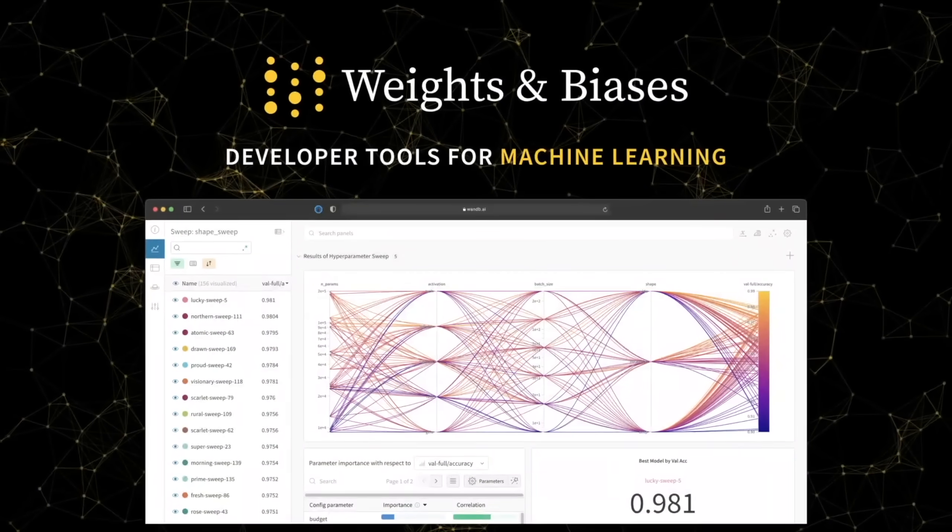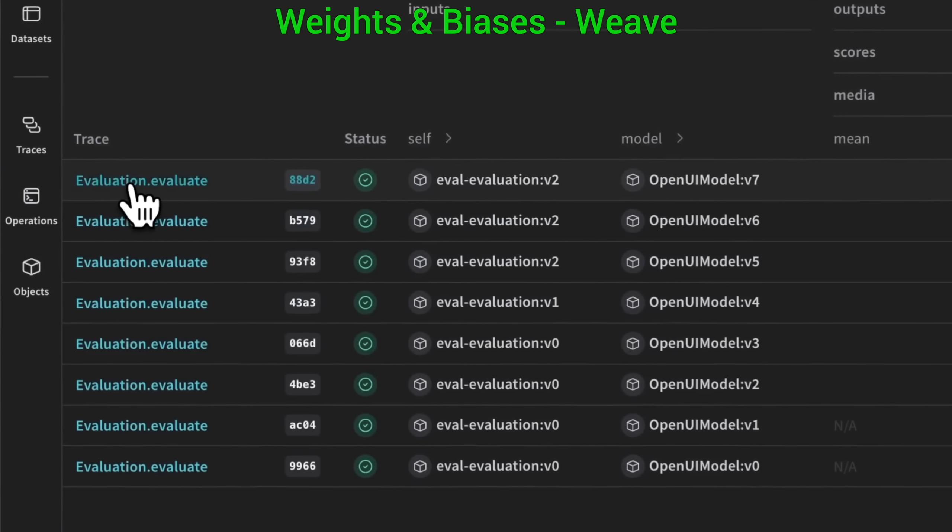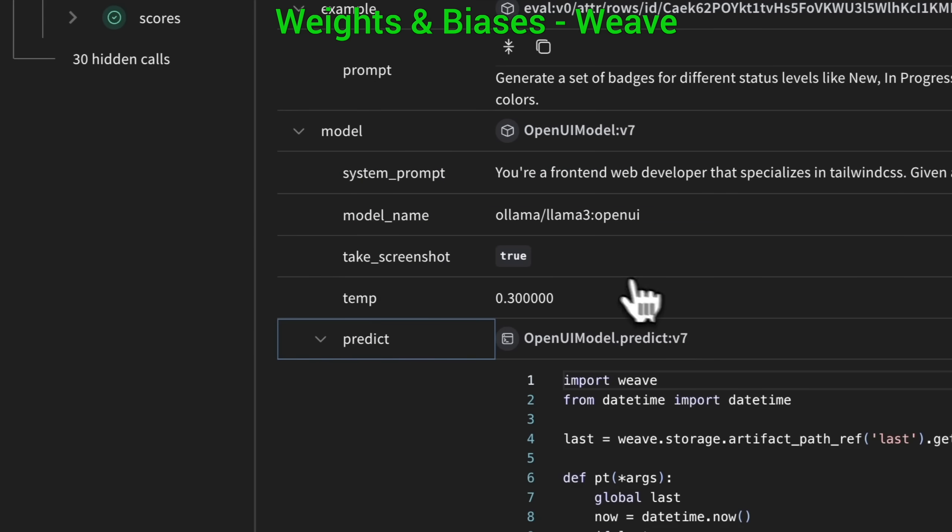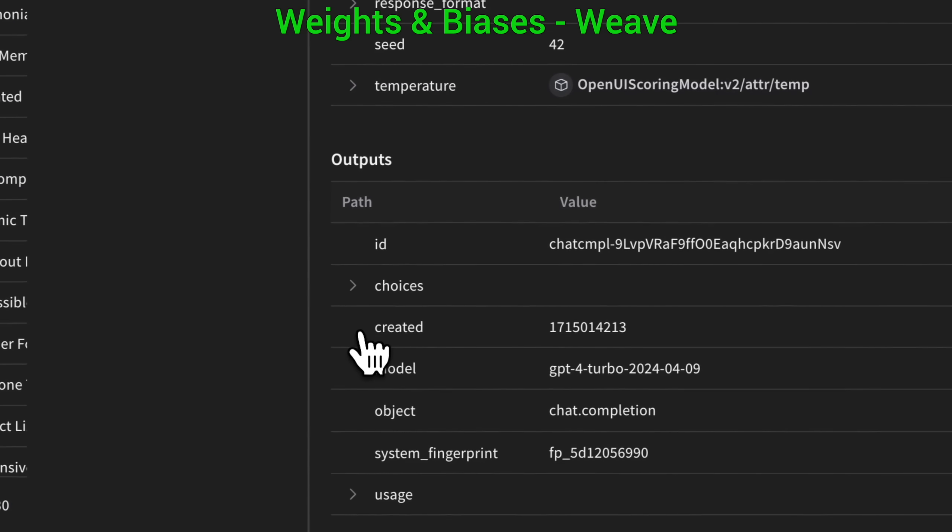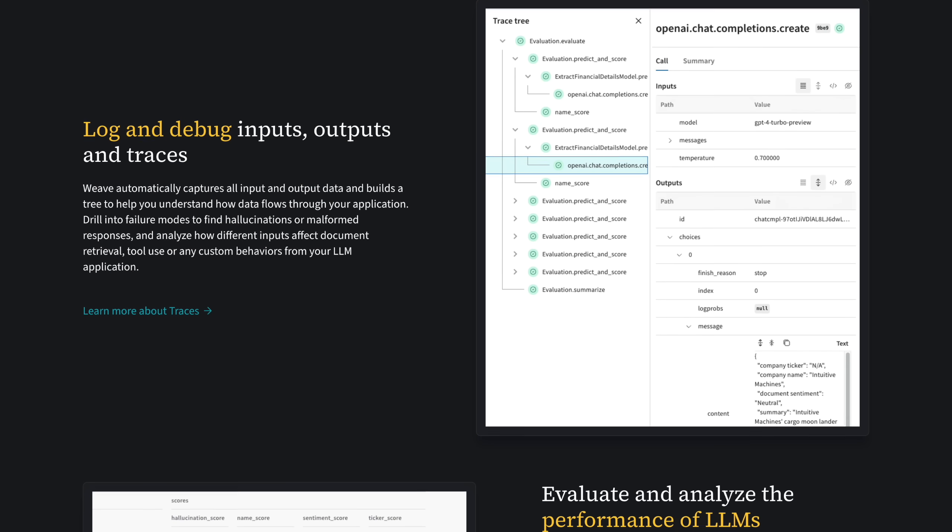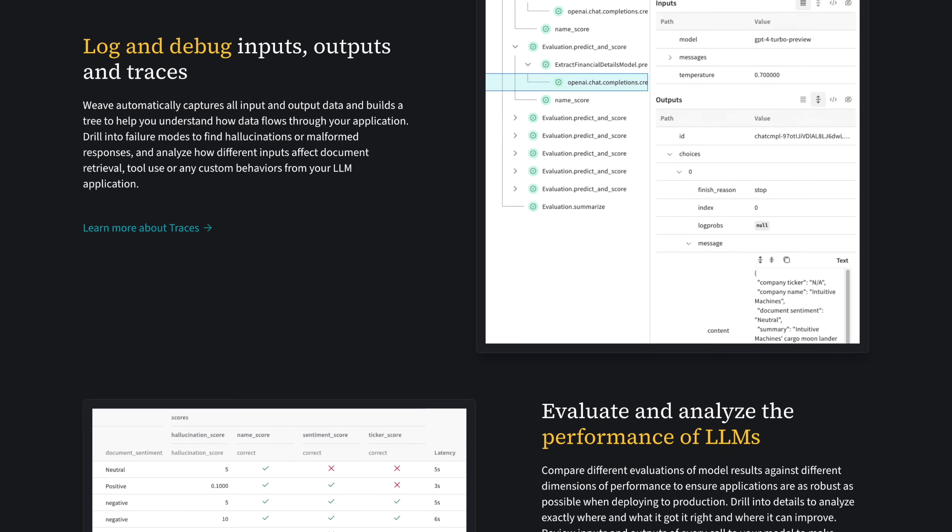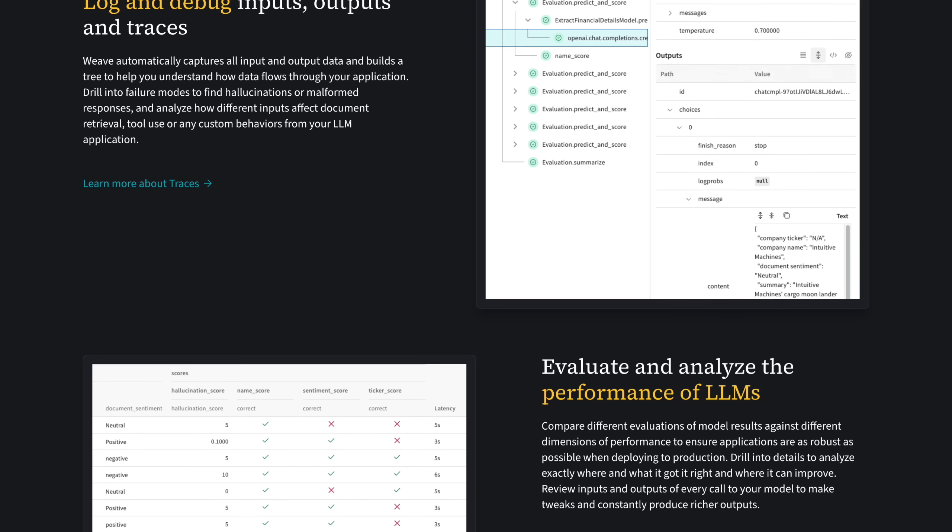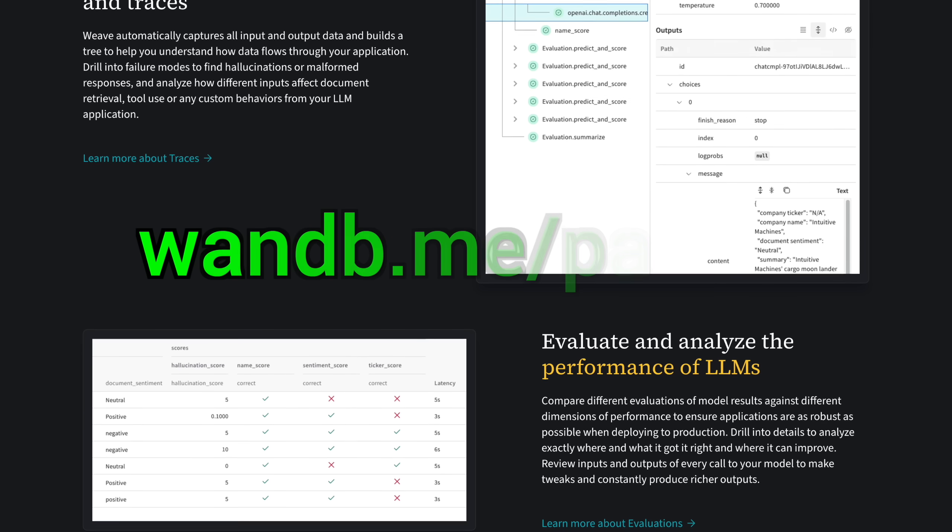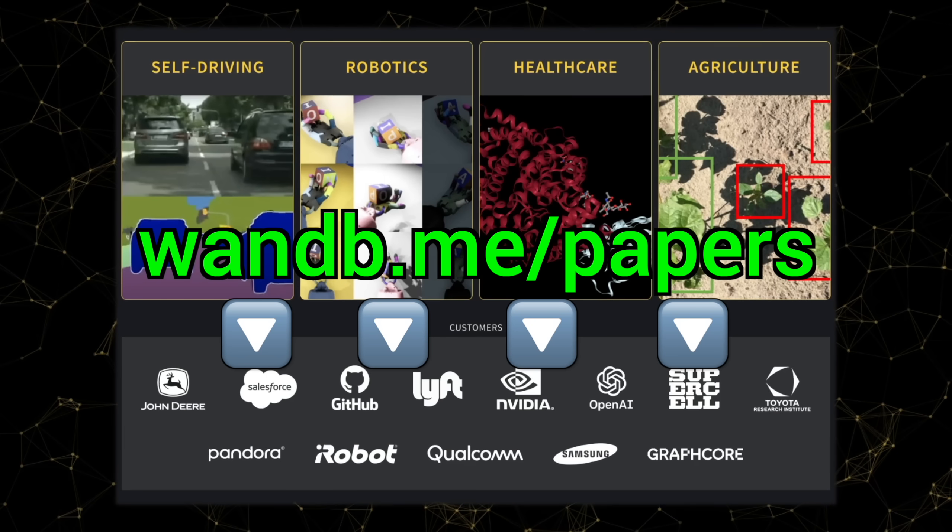We need new tools for the era of LLMs, and Weights and Biases now has Weave, a lightweight toolkit to confidently iterate on LLM applications, use traces to debug how data flows through each step of your app, and use evaluations to measure your progress. It is the best! Try it out now at wnb.me slash papers or click the link in the description below.